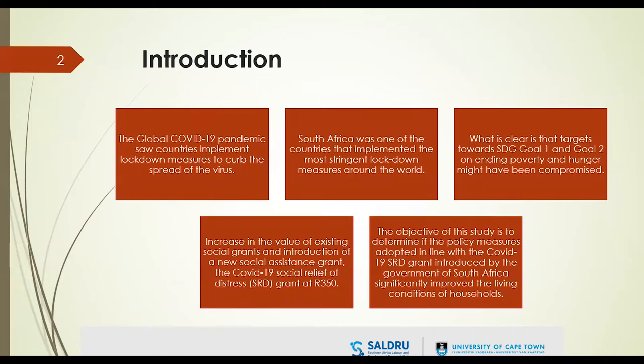At the start of the pandemic, various countries implemented lockdown measures to cope with the spread of the virus. South Africa implemented some of the most stringent measures in the world, and some of these measures worsened already existing imbalances such as inequality. Sustainable development goals such as ending poverty and hunger may have been compromised.